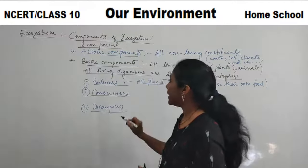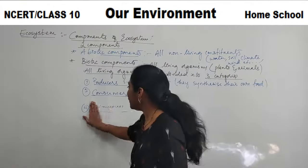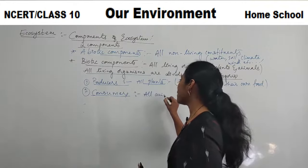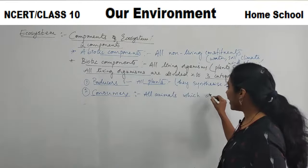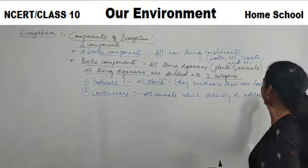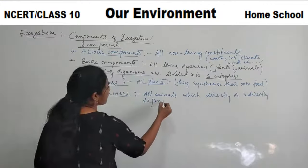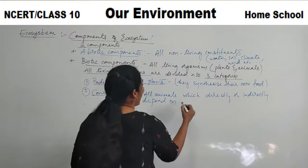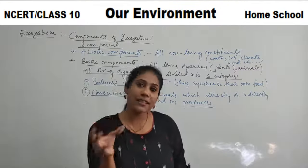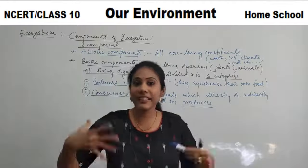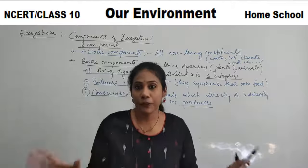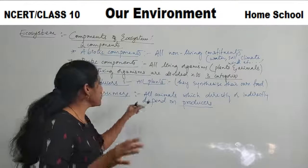Coming to the next variety of biotic component — consumers. What do you mean by consumers? Consumers are all animals which directly or indirectly depend on producers. We human beings and all other animals come under consumers. Some animals directly depend on plants and some indirectly depend on plants. In one way or another, any organism depending on a producer — that is, on a plant — is called a consumer.